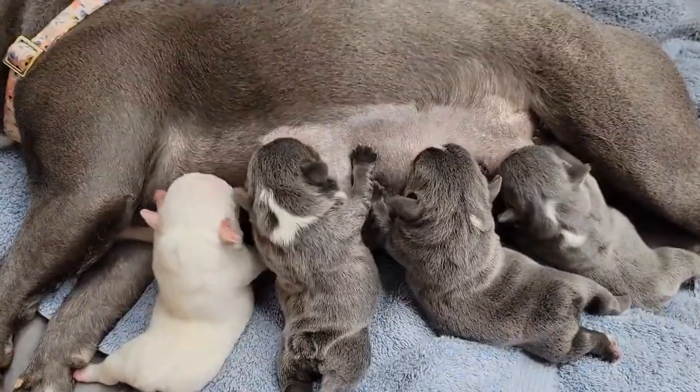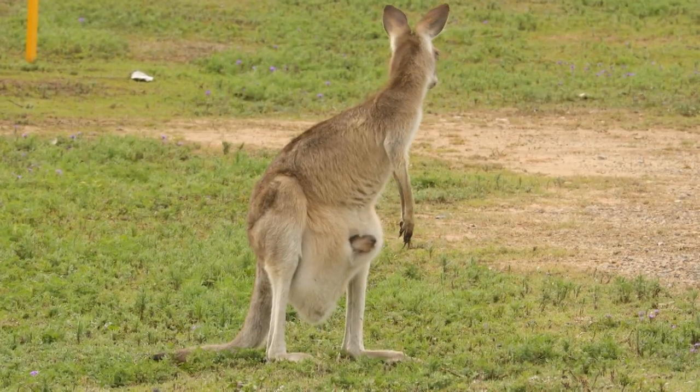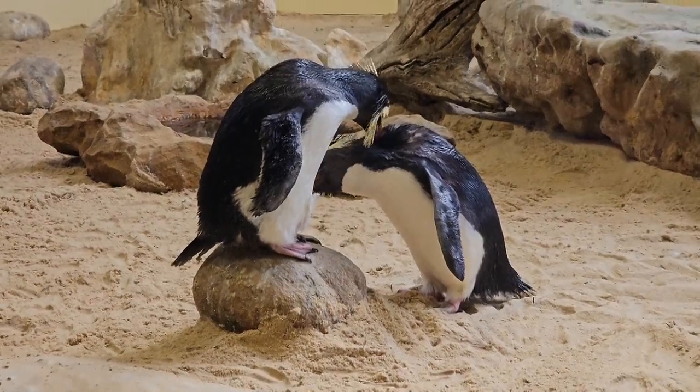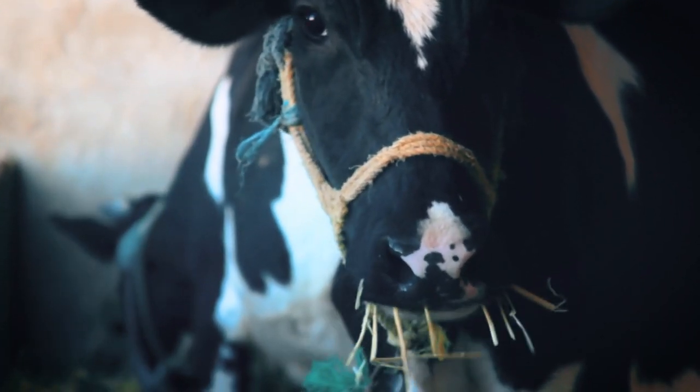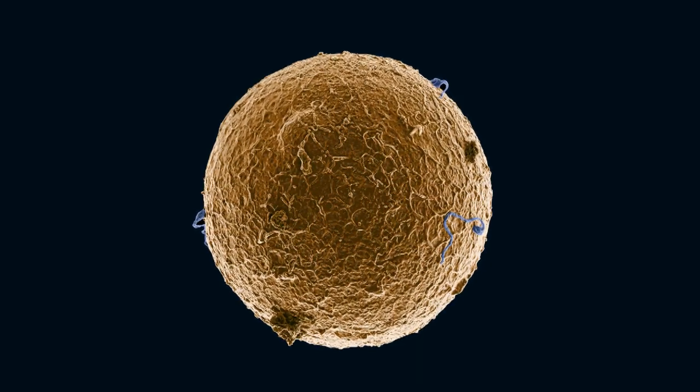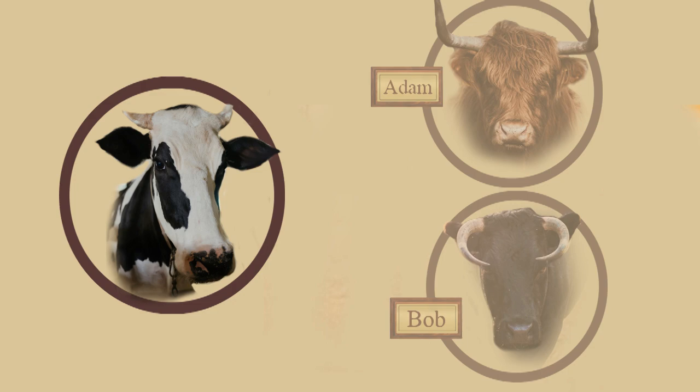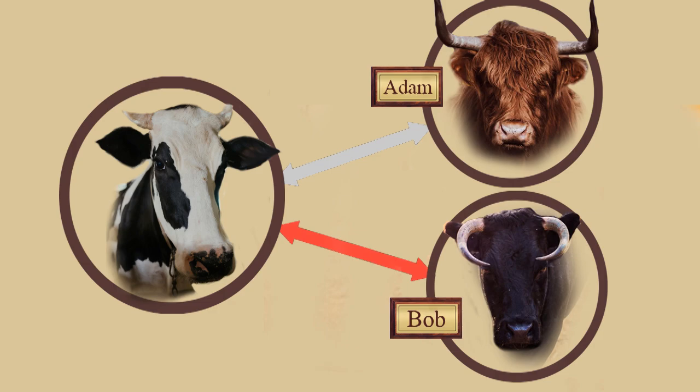When males and females have sex, the female does most of the work of reproduction. She lays eggs or delivers children. Her partner can help, but only indirectly. This gives males and females different attitudes about sex. A female has a limited number of eggs that can be fertilized. She has to make a choice. She could let Adam fertilize the eggs, or she could let Bob do it. But she has to choose between them. She has to pick the best partner.